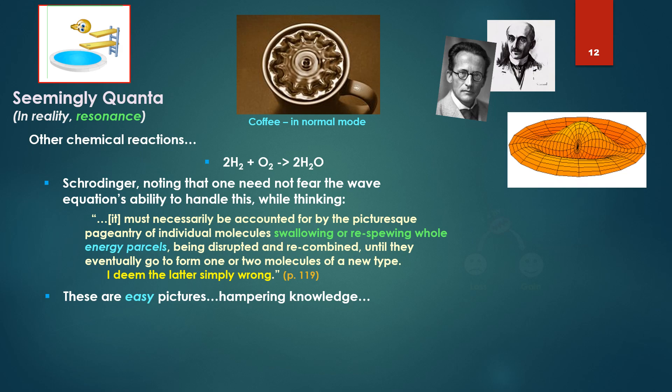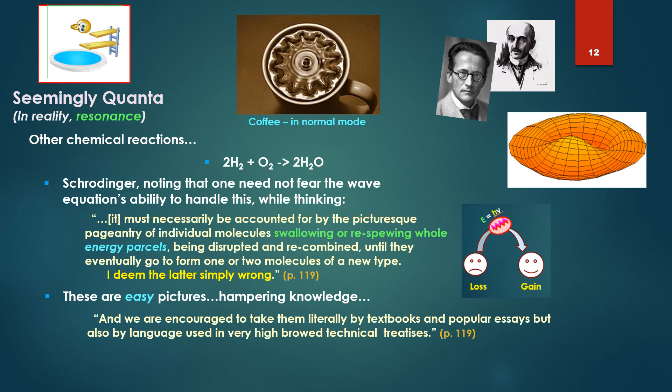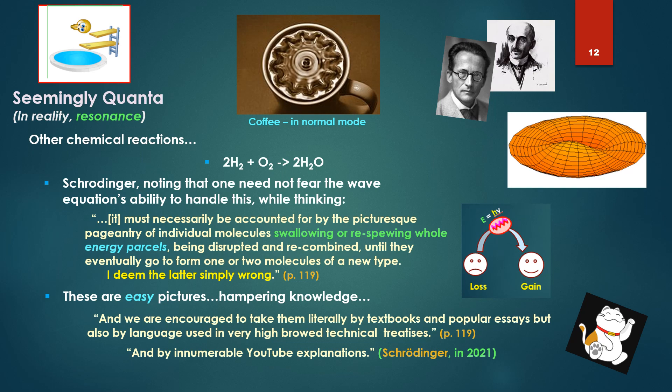Other chemical reactions like 2H₂ plus O₂ going to 2H₂O. Schrödinger notes that one need not fear the wave equation's ability to handle this while thinking it must necessarily be accounted for by the picturesque pageantry of individual molecules swallowing or re-spewing whole energy parcels, being disrupted and recombined until they eventually form one or two molecules of a new type. I deem the latter simply wrong.